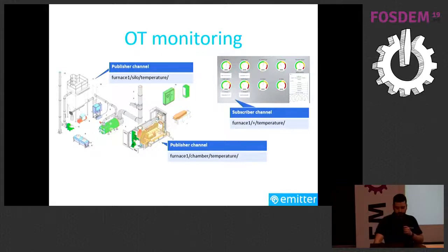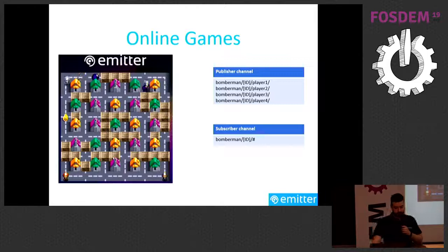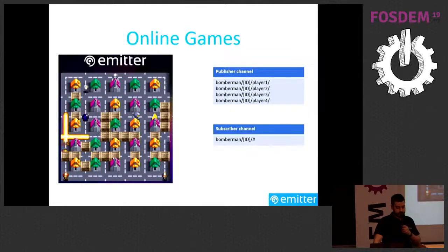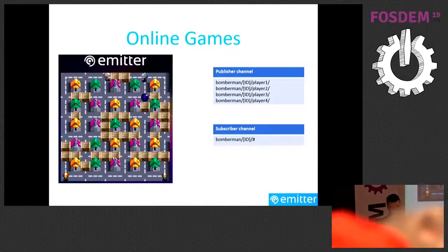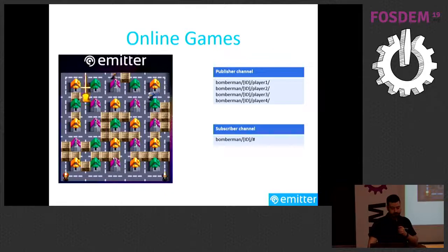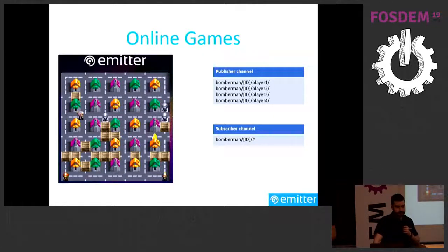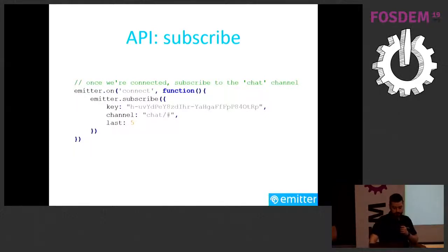Another use case is online games. I wrote a Bomberman demo to show that Emitter is very low latency — I'm playing with my brother over the internet and it's very fluid with almost no lag compensation, relying on real-time messages sent very fast. There is one sub-channel per game ID, one per game ID per player. Each player publishes to its own channel and subscribes to gameID/all, so they all receive each other's messages — mainly position updates.